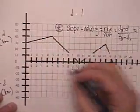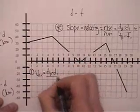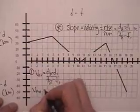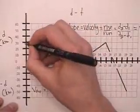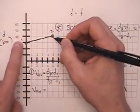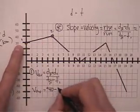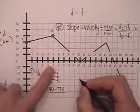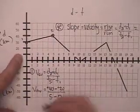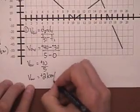Let's find average velocity for segment one. Average velocity equals D2 minus D1 over T2 minus T1. Your two point is always further down the time axis. Come across to where D is — that's positive 40. Subtract D1, which is positive 30. Your time frame is 5 hours minus 0 hours. So we get 40 minus 30 over 5, which is 10 over 5.